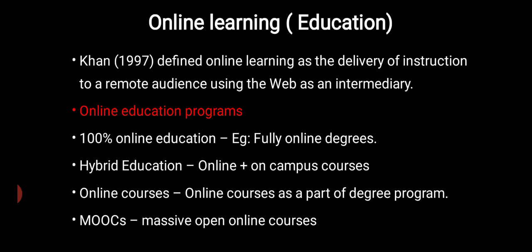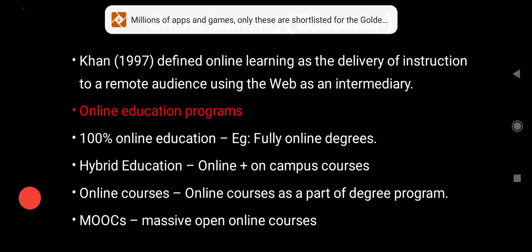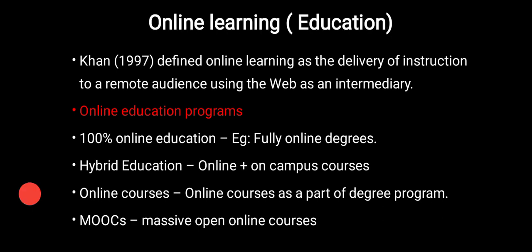There are different platforms or programs under online courses. First is 100% online education, where some universities offer their degrees entirely online. Second is hybrid education, where students pursue a combination of online and on-campus courses, meaning institutions offer courses in both online and offline modes.